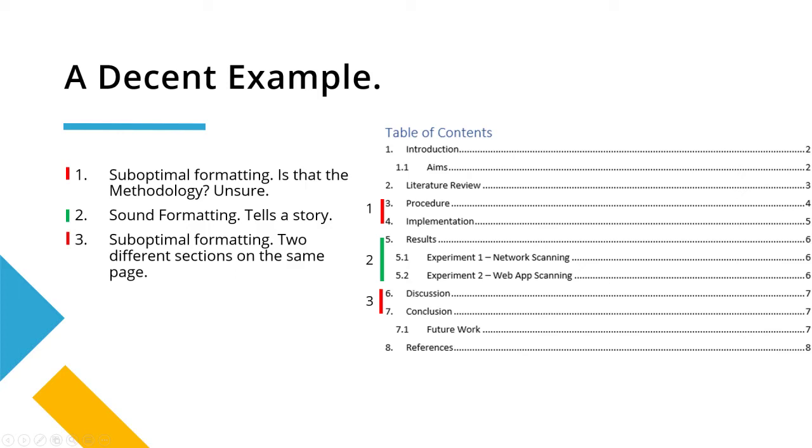Number three is a bit of a sneaky one from the table of contents. We can see that the discussion and the conclusion are on the same page. However, from the weightings we saw in the marking rubrics, having these on the same page isn't really filling me with hope. But this actually happens all the times because students forget to update the table of contents.